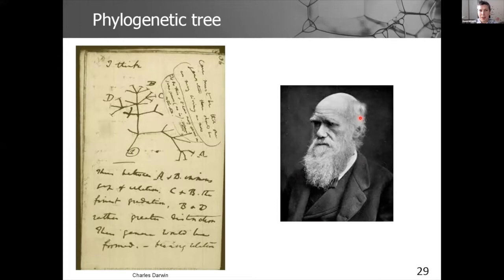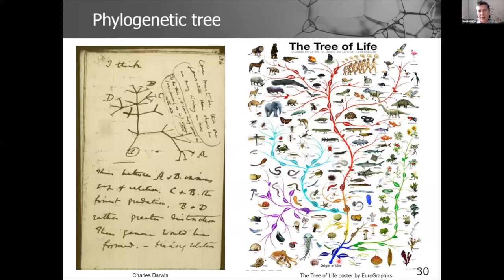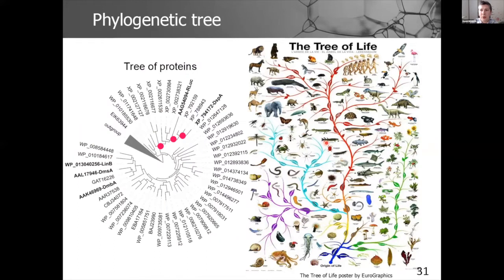It has been proven many times in the literature that ancestral proteins possess good stability. The method is based on phylogenetic analysis. Charles Darwin drew the first evolutionary tree, and from that time we have developed the tree of life where we can observe the evolution of different groups of organisms. Similarly, you can observe evolution at the protein level — gathering homologous sequences from different organisms, constructing an evolutionary tree of proteins, and using ancestral sequence reconstruction to define any ancestral protein at any node using the most statistically probable sequences.